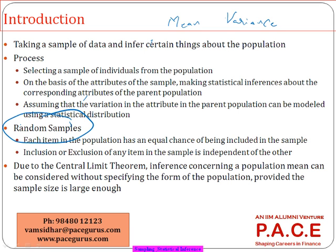Because of the Central Limit Theorem, estimating the population mean has become quite straightforward. It makes a clear assumption that the sample mean will follow a normal distribution with a mean equal to the population mean and a variance equal to sigma squared by n. Because of that assumption, we can make predictions about the population mean quite comfortably based on the sample mean, if the sample size is large enough — the sample mean will follow a normal distribution irrespective of the original distribution.